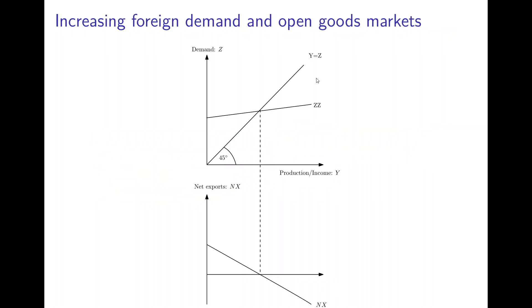To this end we again draw the goods market equilibrium for an open economy as we had it before in the previous video, where we have demand on the vertical axis, production income on the horizontal axis. We have the 45-degree line and we have the ZZ curve, and where the ZZ curve intersects the 45-degree line.